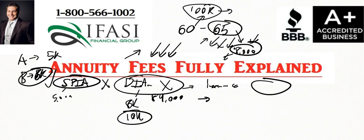Just like how the SPIA works, you're not paying a fee, but that doesn't make it a good product. I don't like single premium immediate annuities unless they're completely necessary, and I really hate deferred income annuities because I think you're losing too much control. The insurance company knows exactly what they're doing — that's why they're giving you that offer. But when we're talking about annuity fees, those two contracts do not have annuity fees.